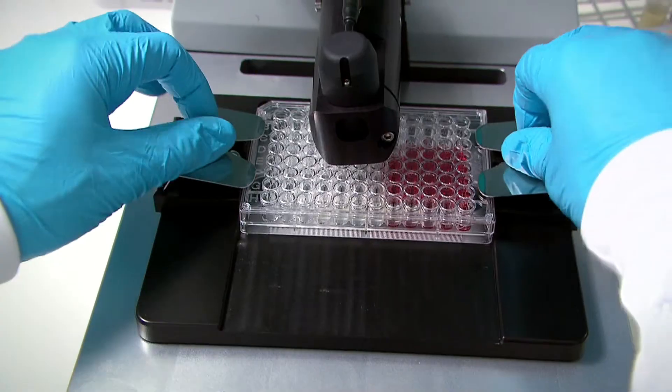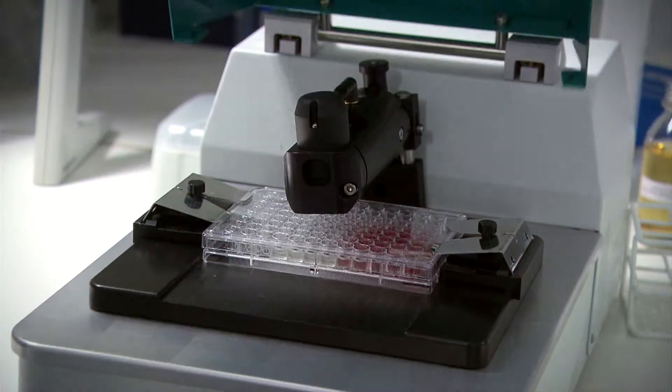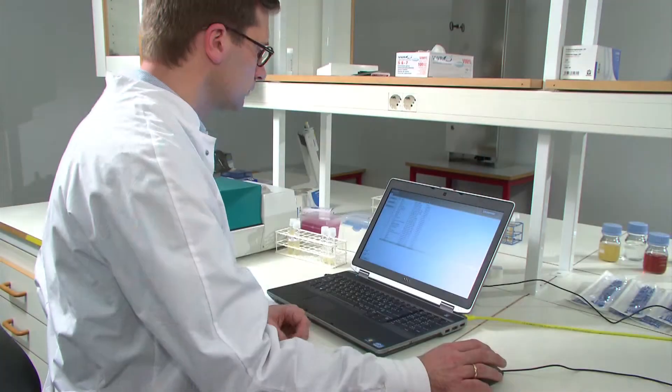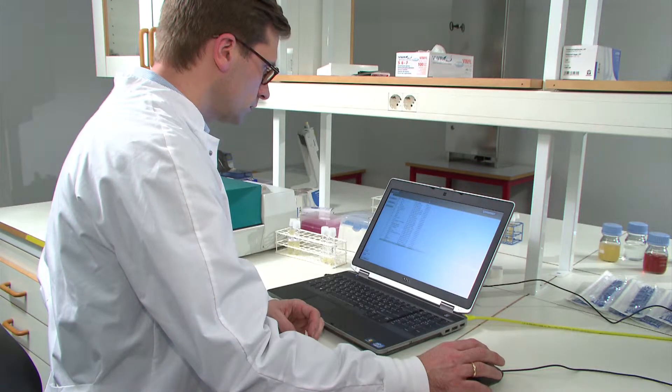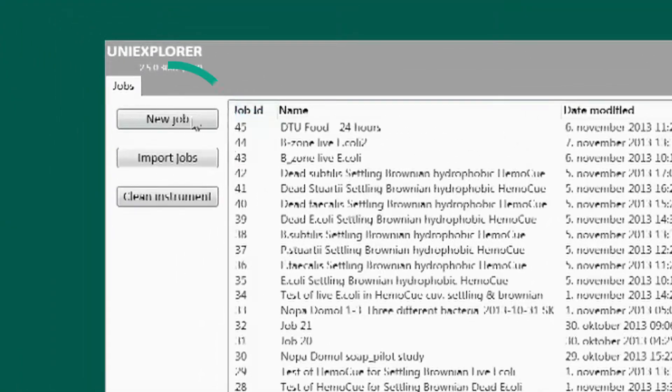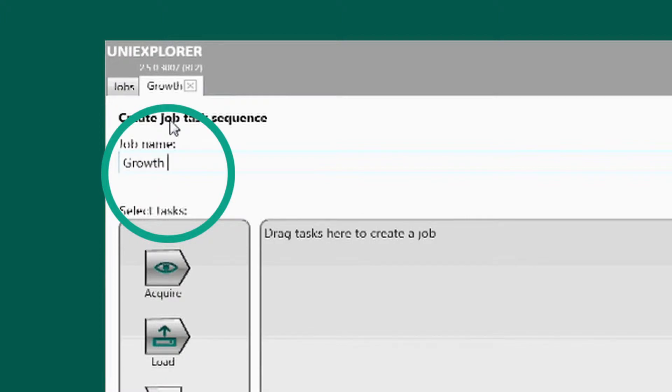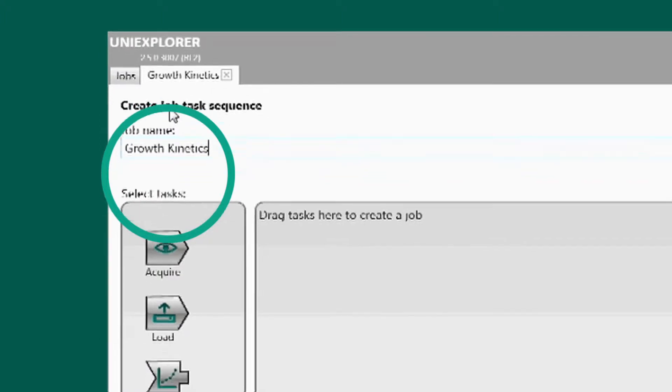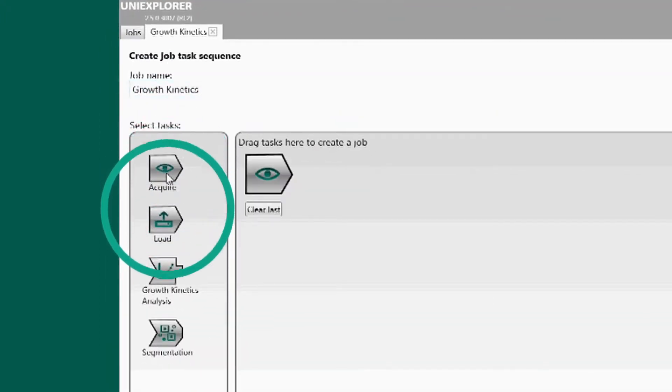The plate is carefully pushed into place and is then fastened. The UniExplorer program on the computer is then started and New Job chosen. The sample is given a name, then choose the Acquire module and after that the Growth Kinetics module.